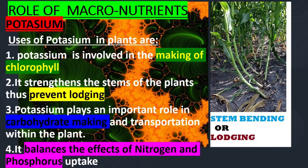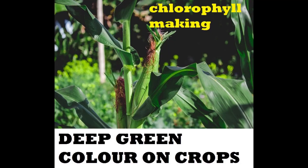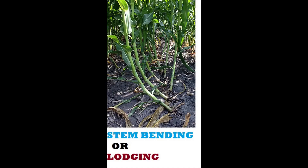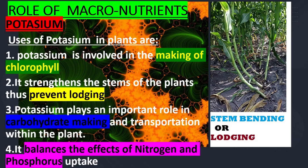The role of macronutrients: potassium. Uses of potassium in plants: one, potassium is involved in the making of chlorophyll. It strengthens the plant against disease attack and also strengthens the stock of the plants, thus preventing lodging. Potassium plays an important role in carbohydrate making and transportation within the plant. It balances the effects of nitrogen and phosphorus uptake.